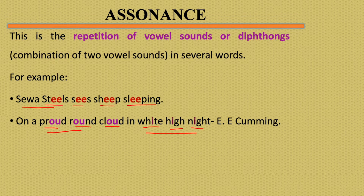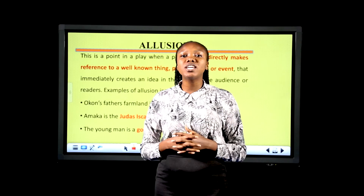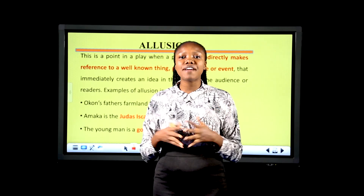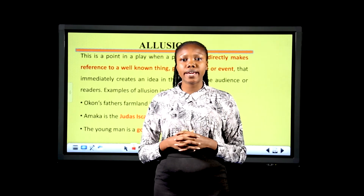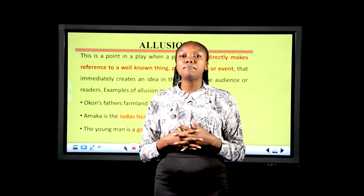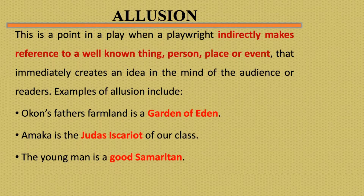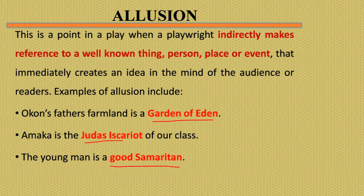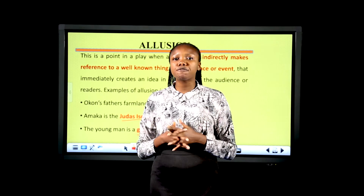Another figure of speech is allusion. Allusion is a point in the play where a playwright makes indirect reference to a well-known object, person, or thing. This creates an idea in the mind of the audience or readers. Examples: 'Okon's father's farmland is a Garden of Eden.' 'Amaka is the Judas Iscariot of our class.' 'The young man is a good Samaritan.' Garden of Eden, Judas Iscariot, and the good Samaritan are all references from the Bible.